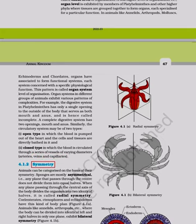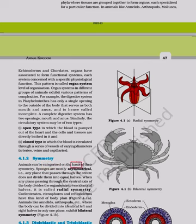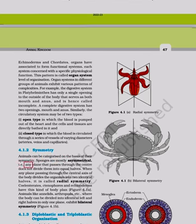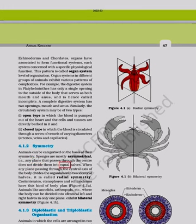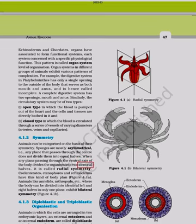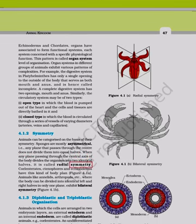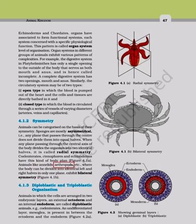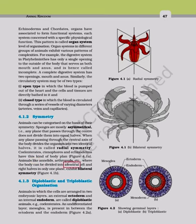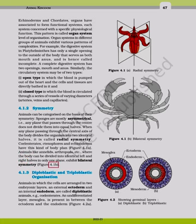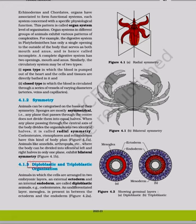Animals can be categorized based on symmetry. Sponges are mostly asymmetrical — no plane through the center divides them into equal halves. When any plane through the central axis divides the organism into two identical halves, it is called radial symmetry — seen in coelenterates, ctenophores, and echinoderms. Animals like annelids and arthropods, where the body can be divided into identical left and right halves in only one plane, exhibit bilateral symmetry.